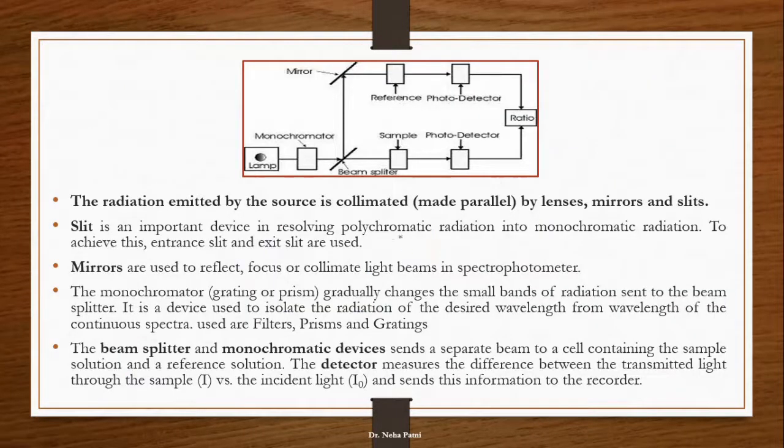Now coming to the double beam - double beam has some extra components. It is double beam so you have to use a beam splitter. The beam splitter and monochromatic device basically send the separate beam to the cells. You have two cells now so you have to split the beam into two. A beam splitter is extra, then there is a mirror, which is also extra because it is going to diverge the light to the respective areas.